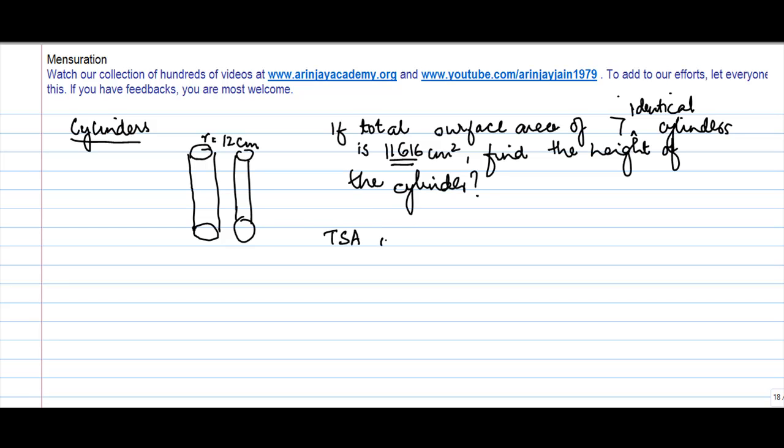Now we know that the total surface area of cylinder is equal to 2πr(r+h).